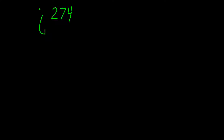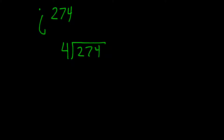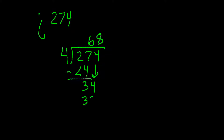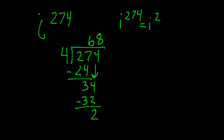Let's try one more example with an even bigger number: i to the 274th power. It looks daunting, but all we do is divide 274 by 4. 4 goes into 27 six times, giving 24; subtract to get 3, bring down the 4. 4 goes into 34 eight times, which is 32; subtract and we have a remainder of 2. So i to the 274th is the same as i squared, which is negative 1. That's our answer.